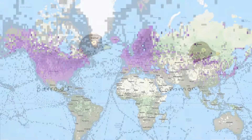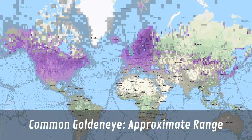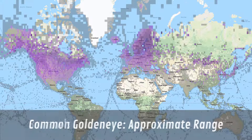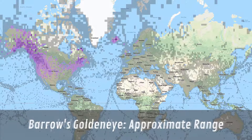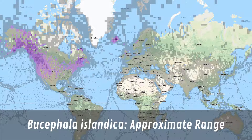Common Goldeneye, as its name suggests, is more common. It can be seen in Europe, Asia, and North America. Barrow's Goldeneye is mostly restricted to North America and Iceland. In fact, the Latin name of Barrow's Goldeneye is Bucephala Icelandica.